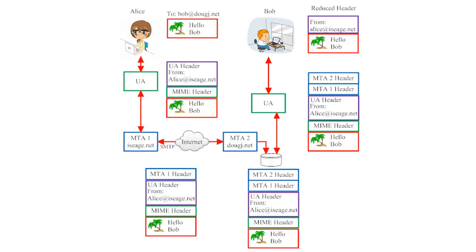Let's examine one more illustration that shows how email systems work. This one shows many of the same things we just saw in the first illustration, but it highlights some different details. In this illustration, we see a user, Alice, sending a message to another user, Bob.